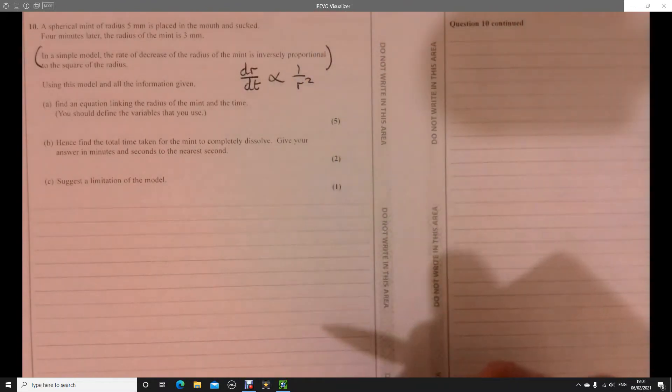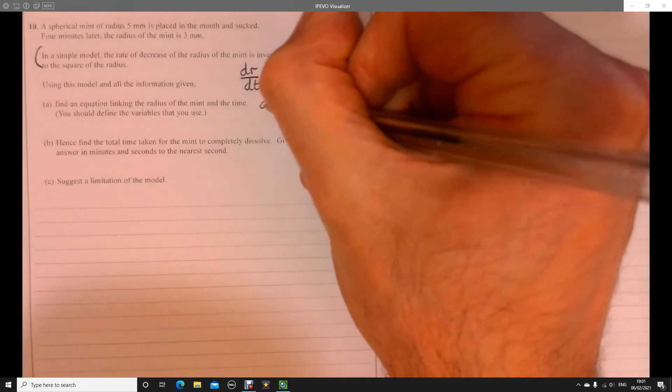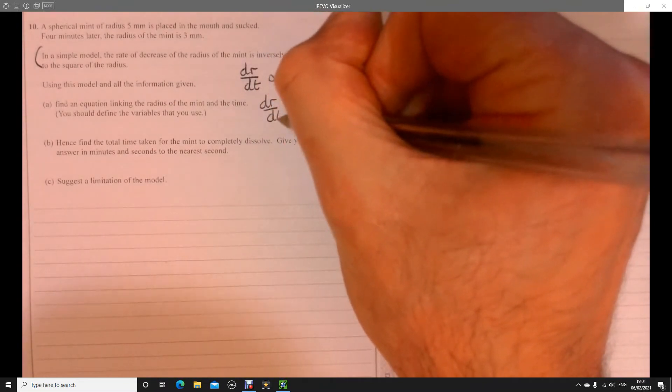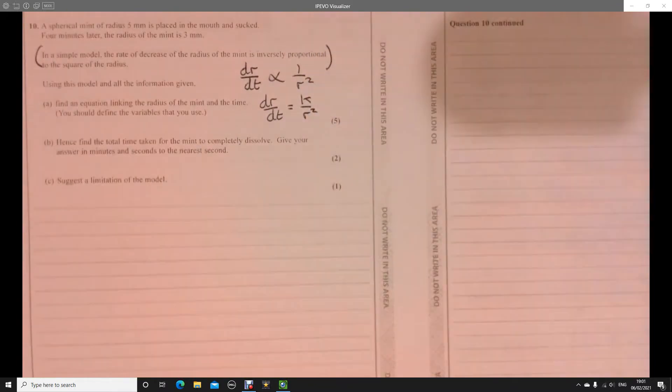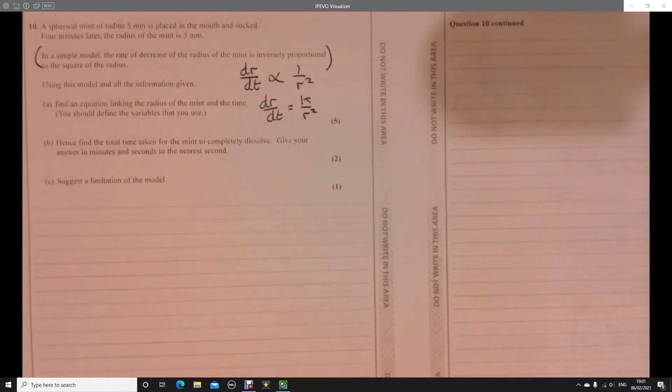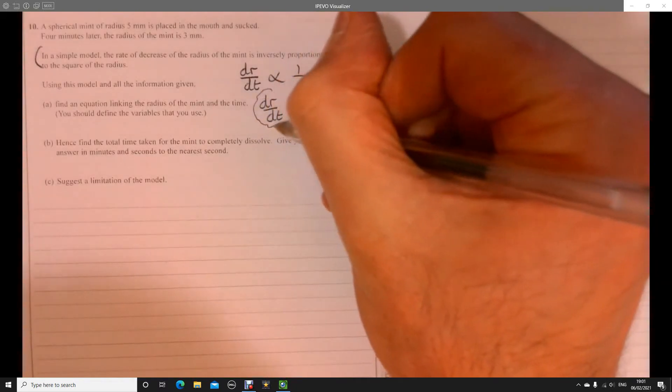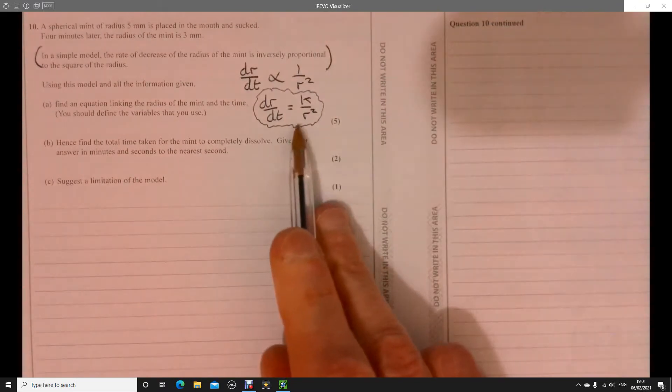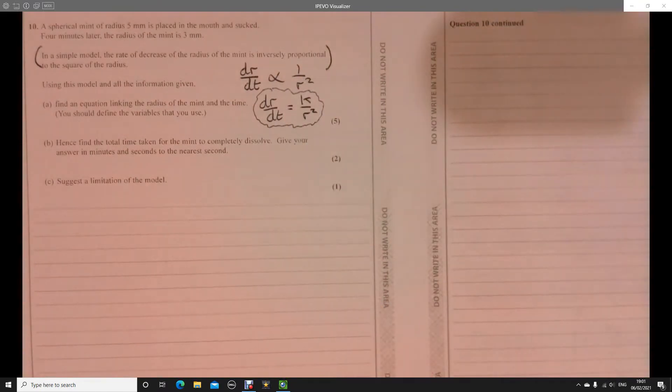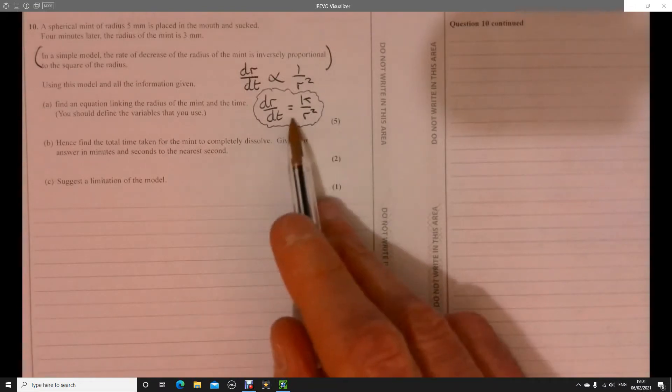So now let's write it as an equation. So dr over dt equals k over r squared. That's just what you would have done with GCSE questions. Right. OK. Now, what does this remind us of? Now, this is the hard bit, really, I suppose, about these questions is just recognizing what the next step is. The actual maths involved is relatively straightforward. It's just recognizing this step. It's differential equations.